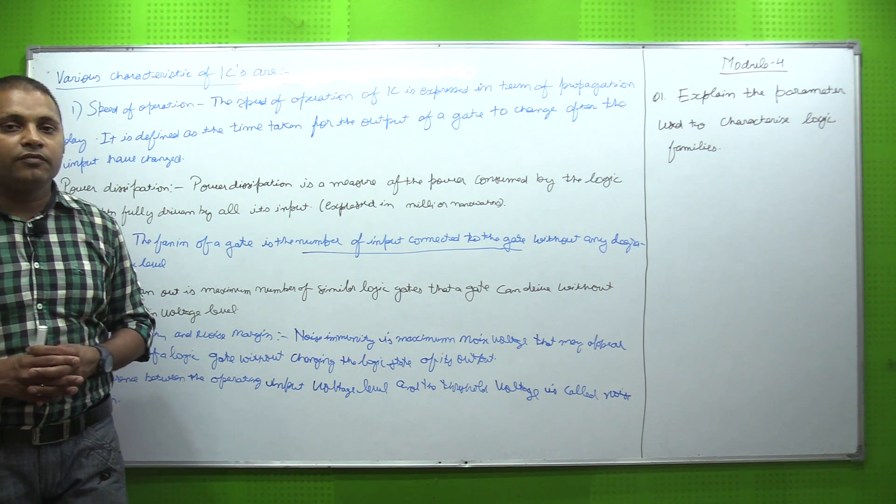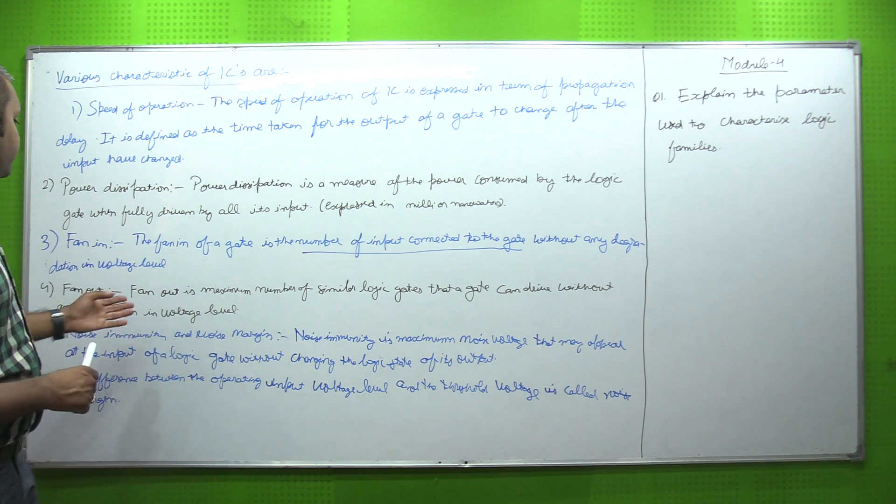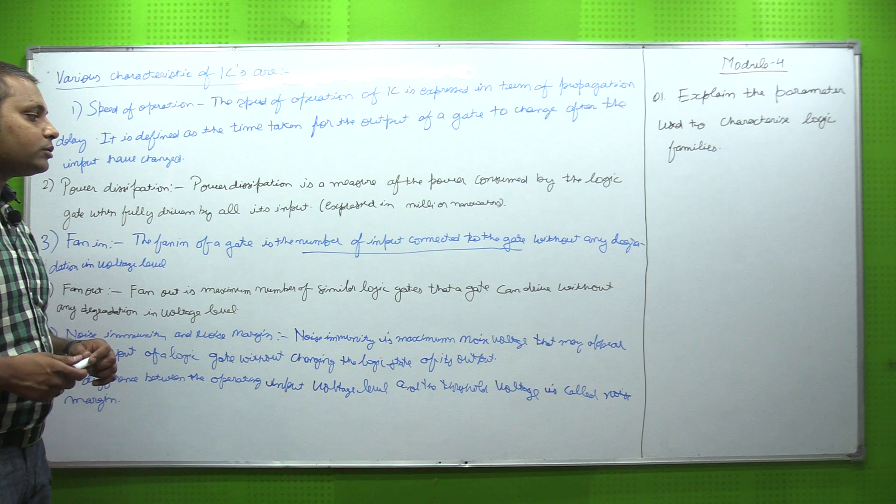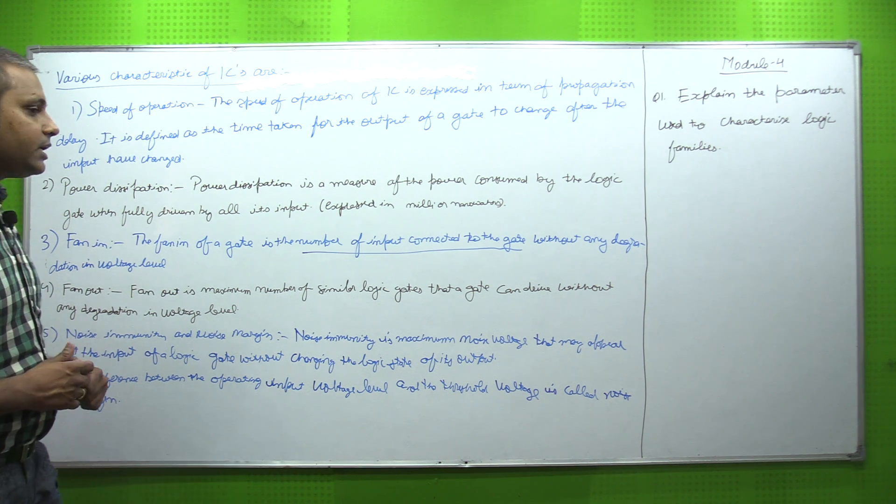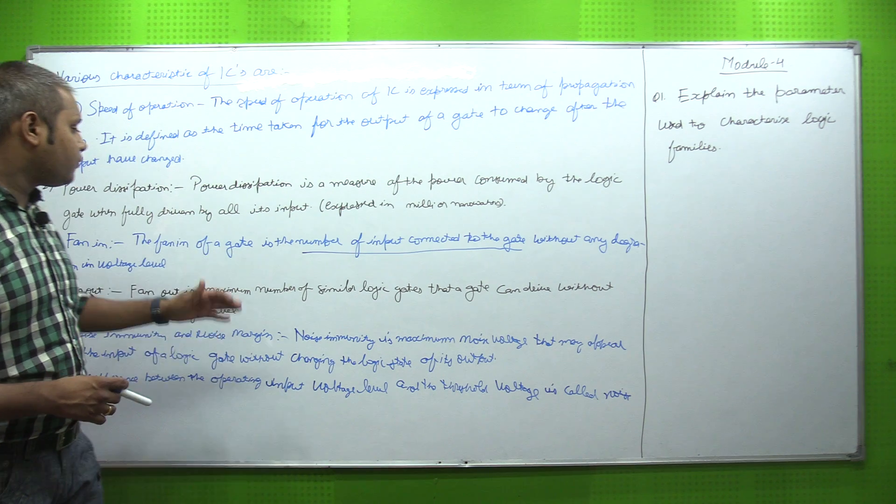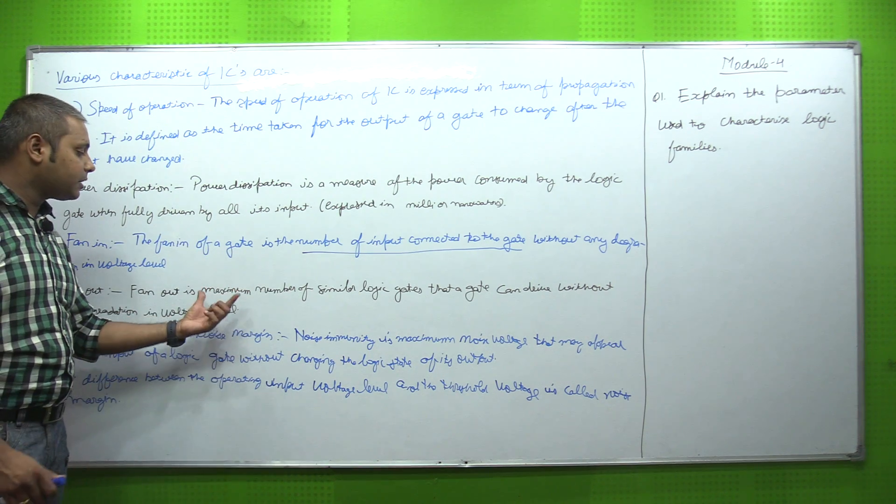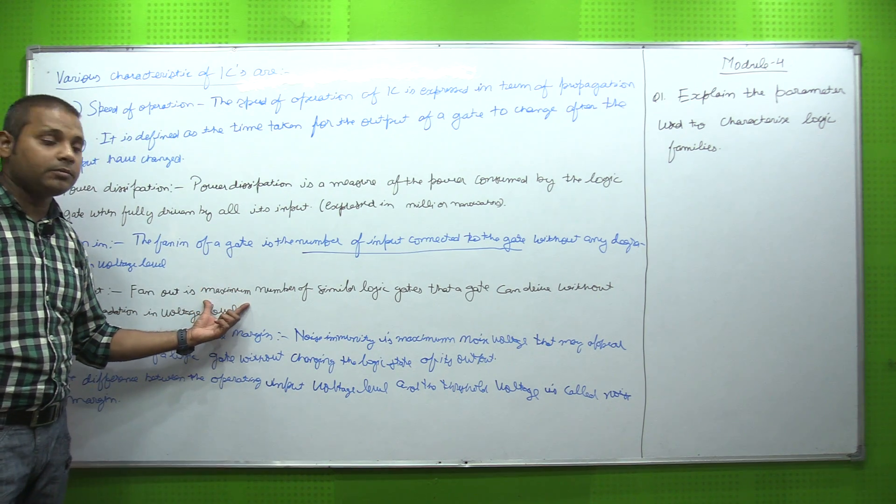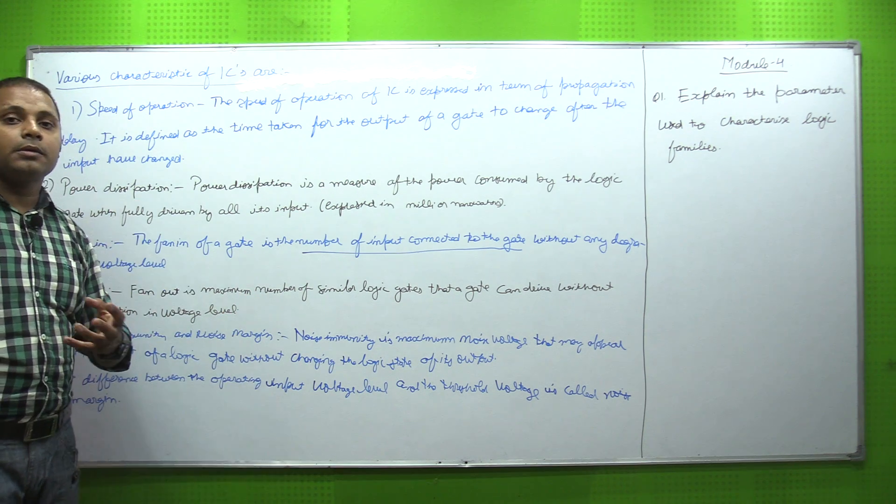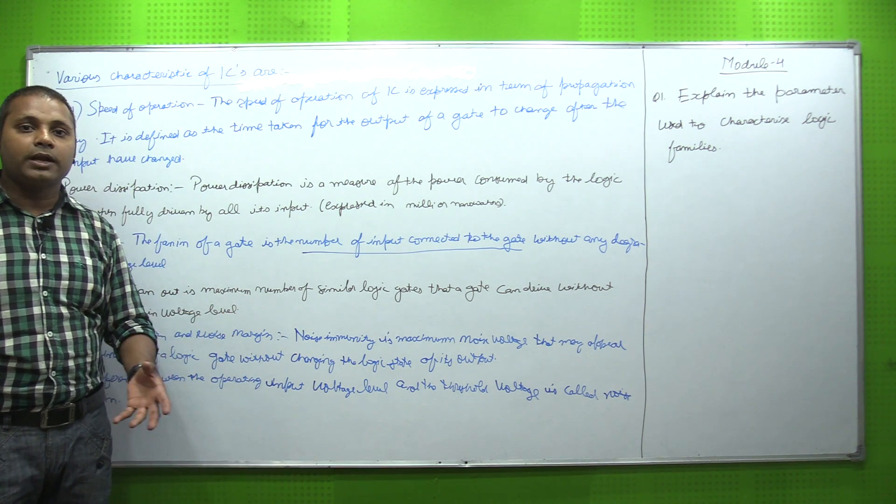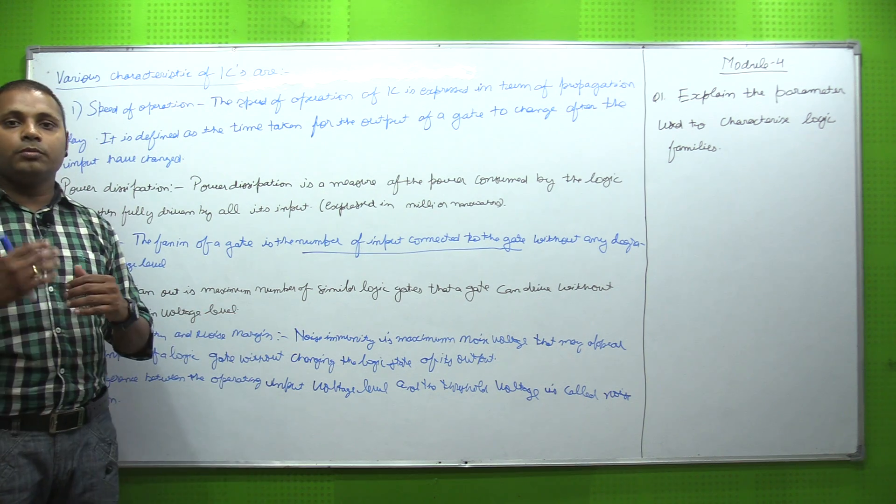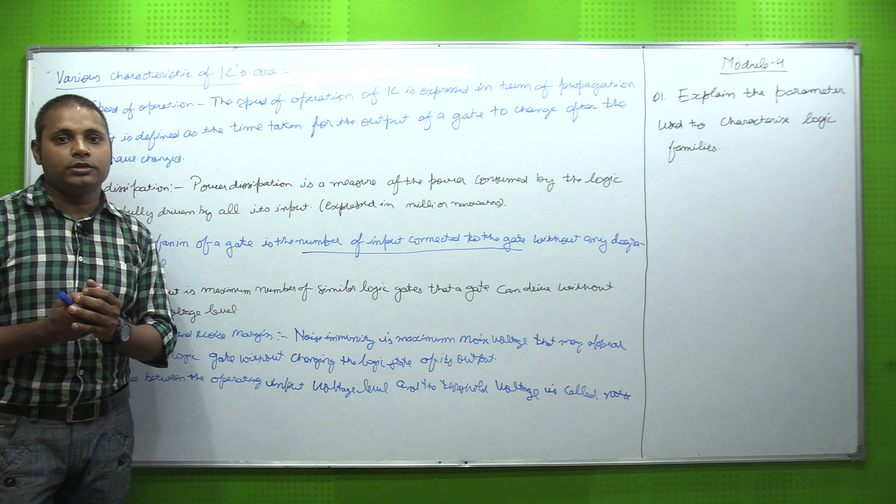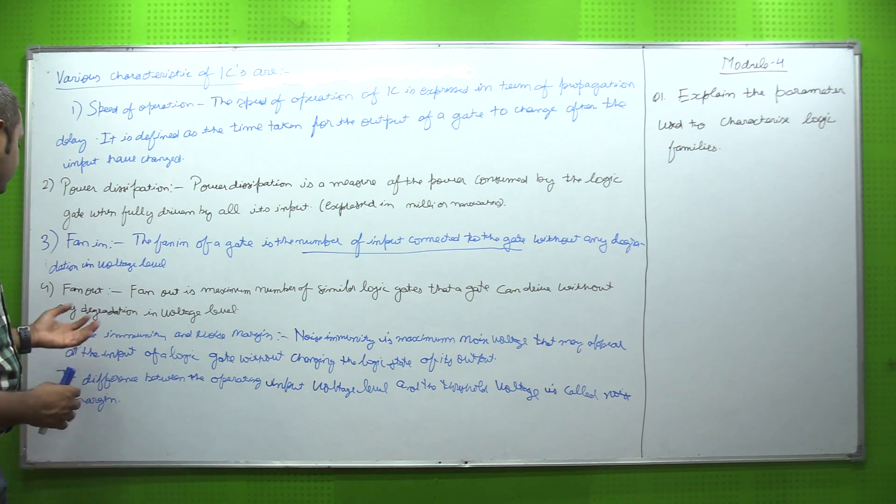Fan-out: the fan-out is the maximum number of similar logic gates that a gate can drive without any degradation in voltage level. Fan-in and fan-out are similar, but here we have the word maximum number - how many similar gates we can add inside the IC so that the voltage level does not degrade. That is the fan-out.